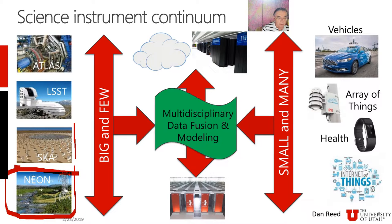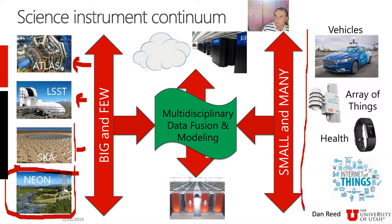Another interesting example is the Squared Kilometer Array, the next generation radio telescope, and large scale sky survey telescopes — astronomical observational devices typically having multiple components which then have to be integrated together to get the answer. We have Atlas, which is one of the detectors at the Large Hadron Collider at CERN — the other big one is CMS — which discovered the Higgs boson. So here we have big and few with NEON being a bunch of small devices. We also have various examples of lots of little devices: Fitbits, vehicles, and the Array of Things mounted on telephone poles in Chicago.